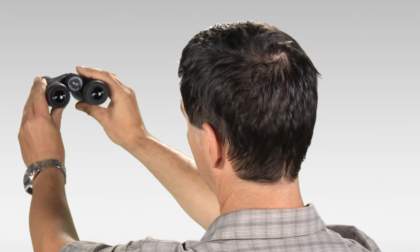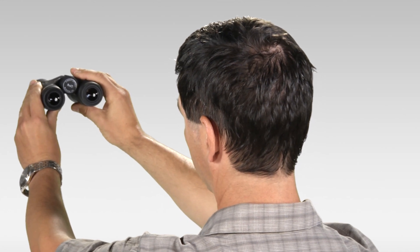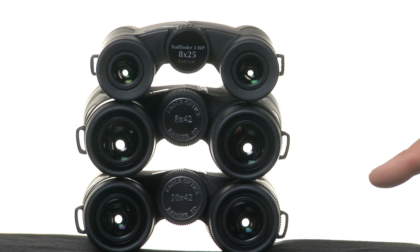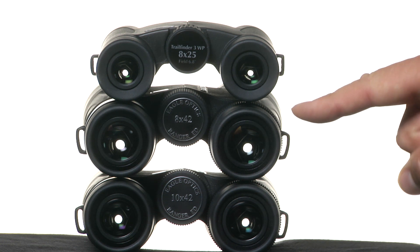So you can see a binoculars exit pupil when you hold it at arm's length towards a light source. Here we've got three binoculars, a 10x42, an 8x42, and an 8x25.